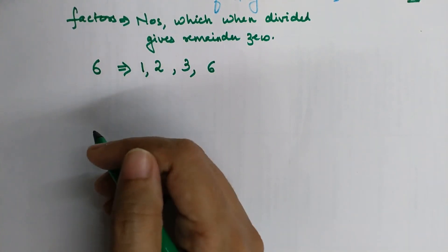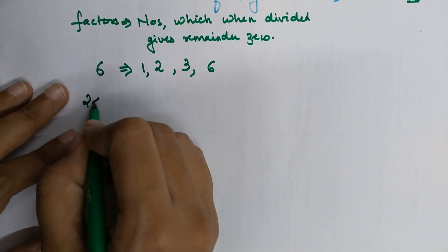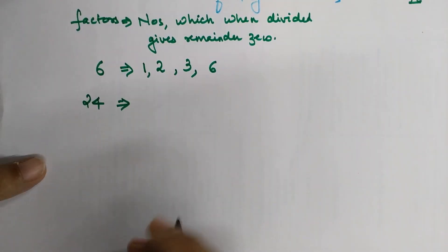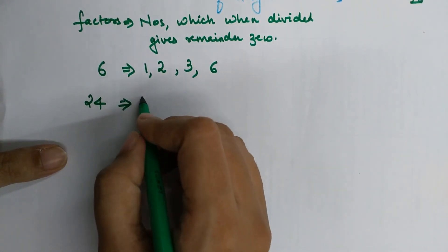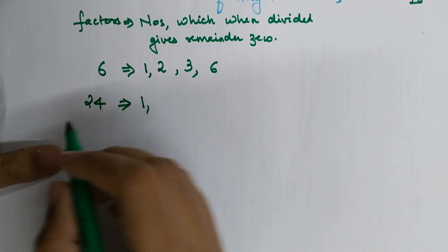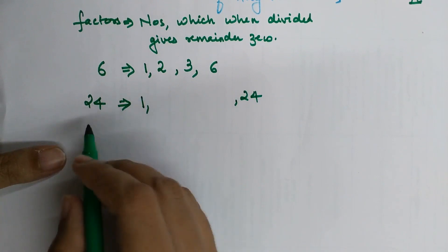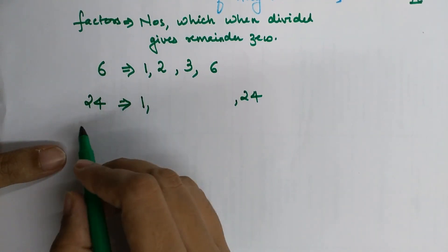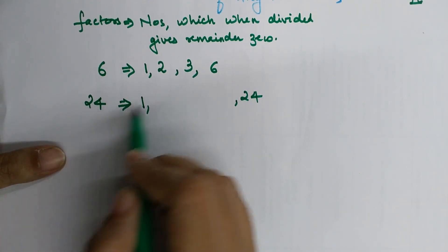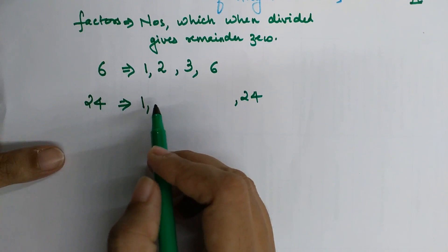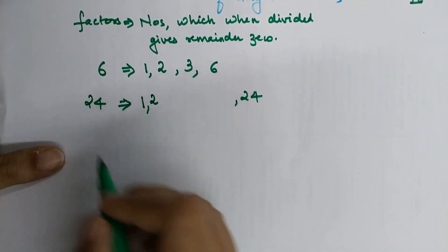Now let's find the factors of number 24. Again, the first number is always 1, since 1 divides all numbers, and 24 because every number is divisible by itself. After 1, we check 2 — and since 24 is an even number, 2 divides all even numbers. So 2 is a factor of 24.